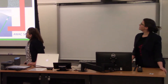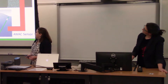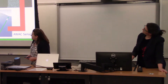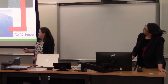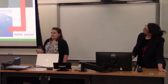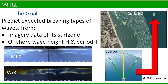The goal of our project was to predict the expected breaking types of waves using only imagery data of the surf zone and offshore wave conditions like period and wave height. This matters because for beaches necessary for Army operations, we may not know the bathymetry underneath the water. Up top here we see Duck, North Carolina, a well-studied beach with a lot of data, including an AWAC sensor used to find the offshore wave height and period.